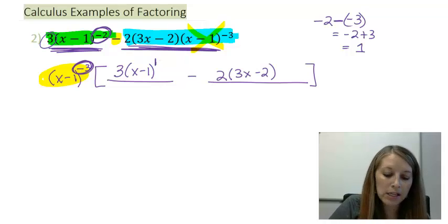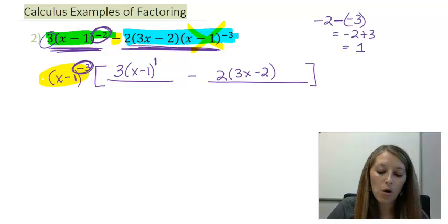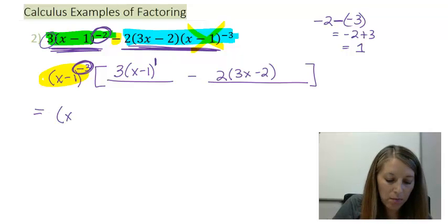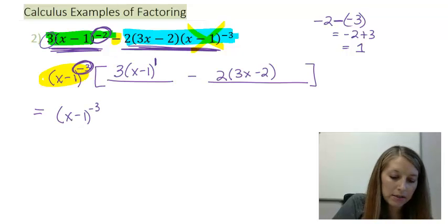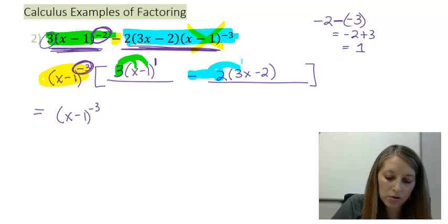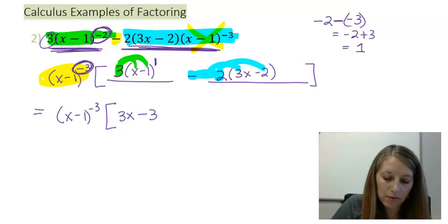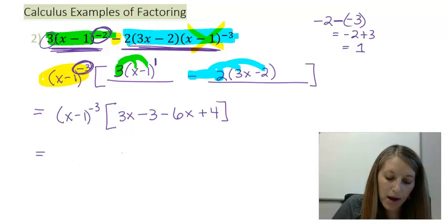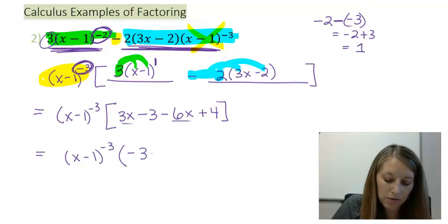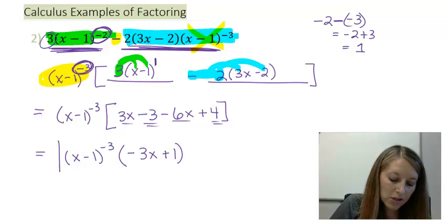To simplify, I copy down my common factor and distribute my numbers in front. In my second piece, don't forget to distribute the negative and the 2. That gives me: 3 times x is 3x, 3 times negative 1 is negative 3. Negative 2 times 3x gives me negative 6x, and negative 2 times negative 2 gives me positive 4. Combining like terms: 3x minus 6x gives me negative 3x, and negative 3 plus 4 gives me positive 1. So that gives me my final answer.